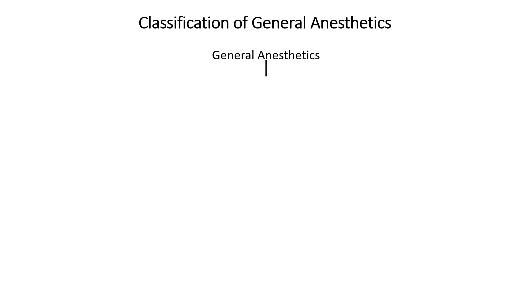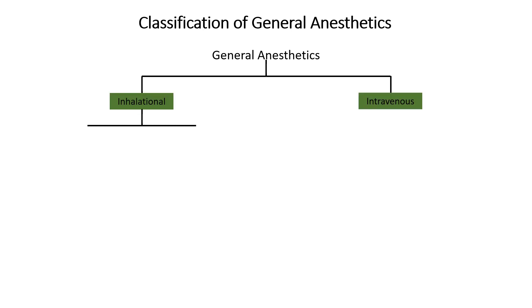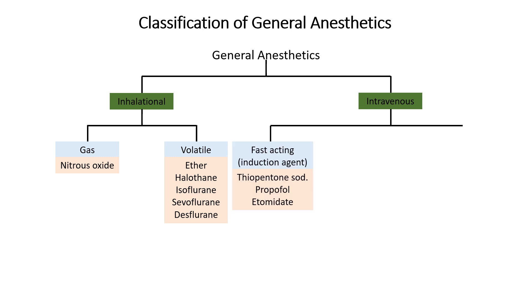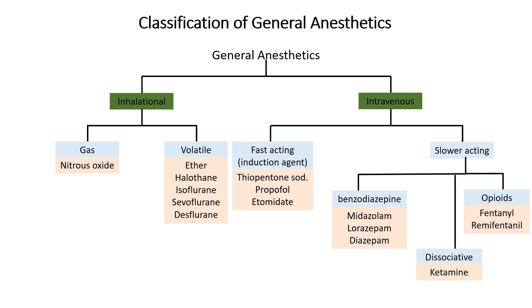General anesthetics are administered via two routes: inhalation and intravenous. Inhalational agents are either gases or volatile liquids, usually used for maintenance of anesthesia but can also be used for induction. Intravenous agents can be classified as rapid-acting drugs used for anesthesia induction, and slower-acting drugs needed for amnesia, like benzodiazepines, and analgesia, like opioids. Ketamine, a dissociative drug, provides hypnosis, analgesia, and amnesia. Muscle relaxants can also be included as part of intravenous agents. In subsequent videos, we will study all these drugs one by one.